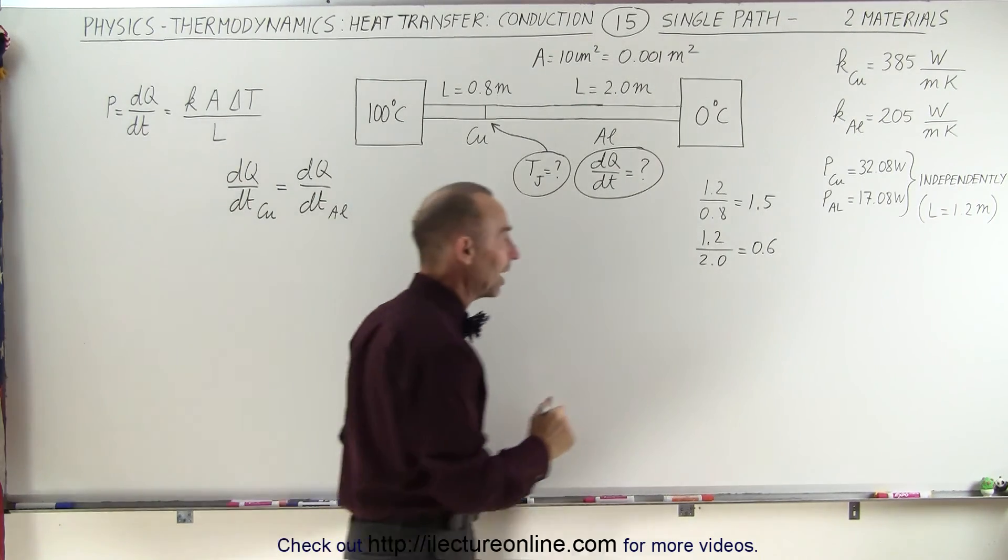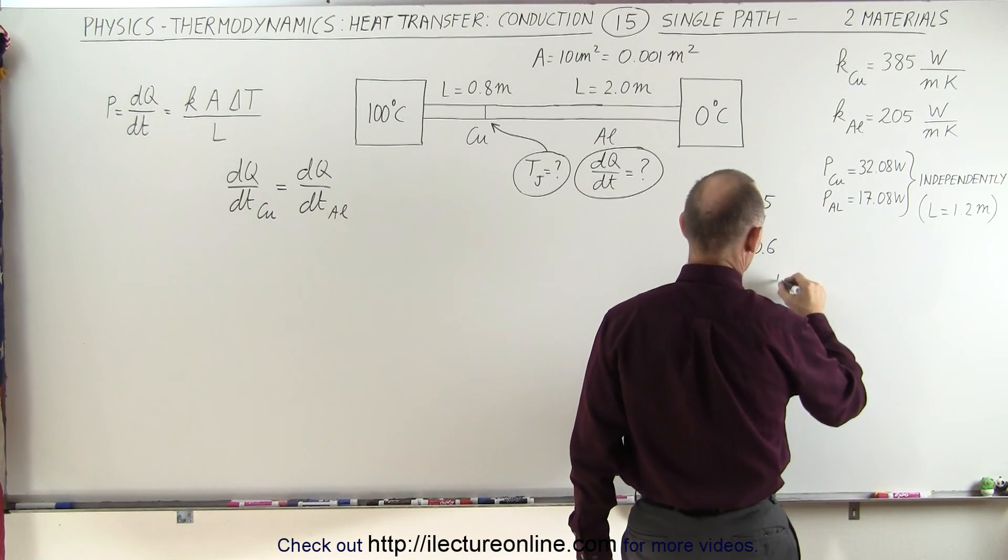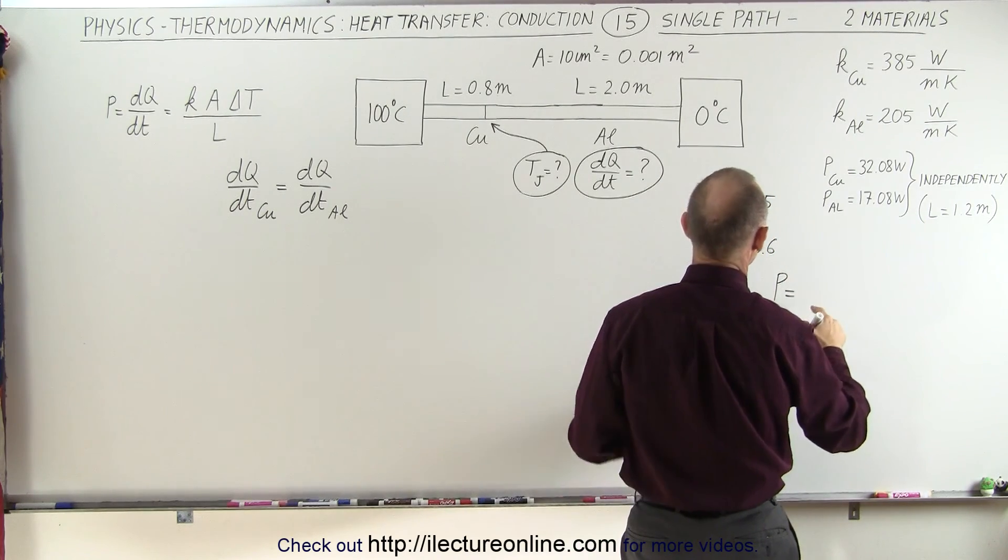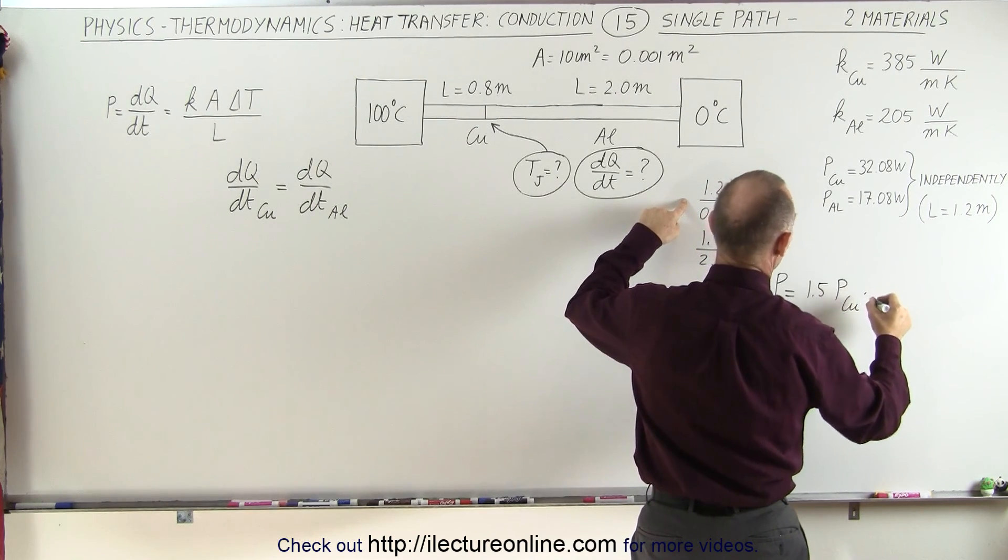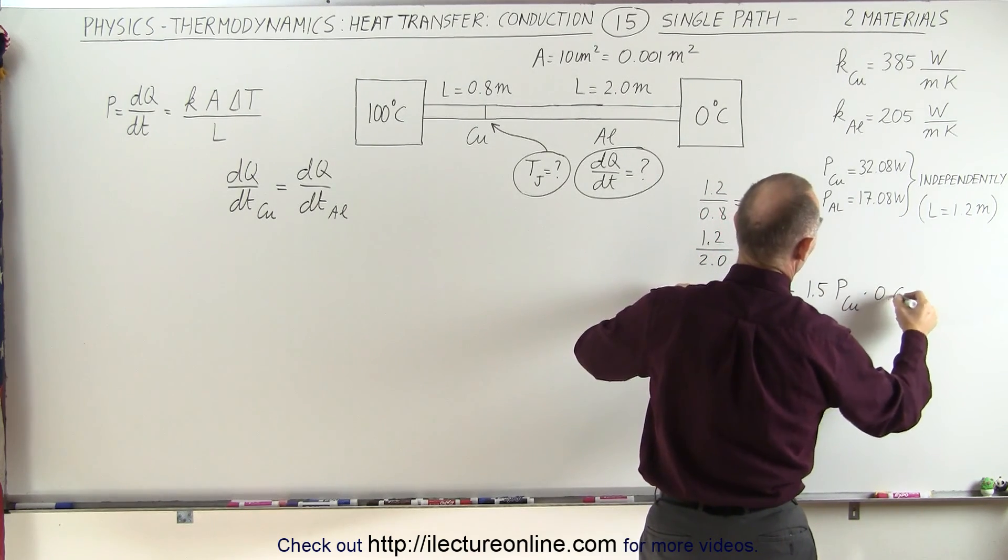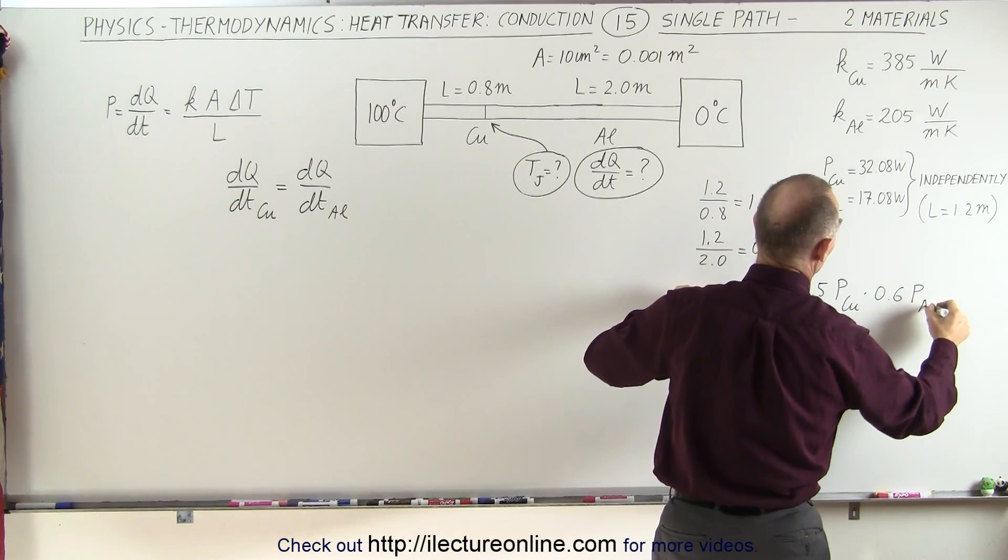So let's see how that equation works now. So we can say that the power dissipated is equal to 1.5 times the power of the copper times 0.6 times the power of the aluminum section.